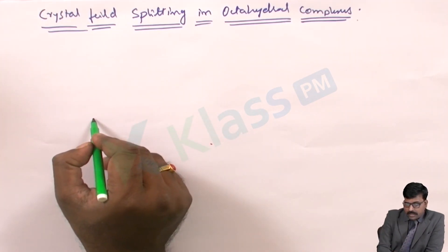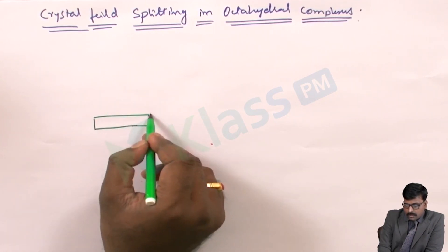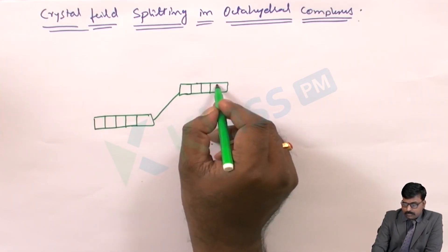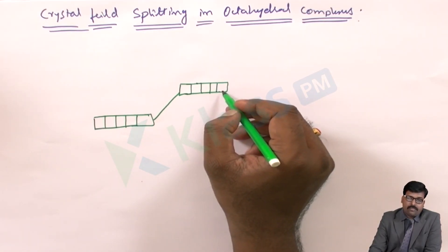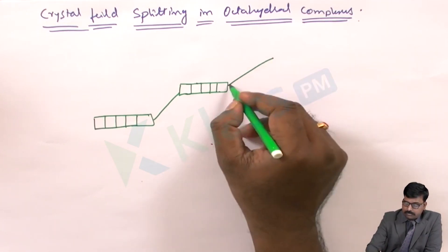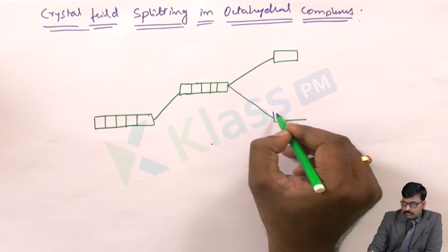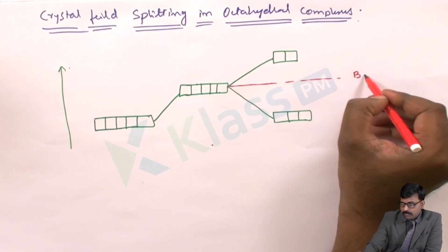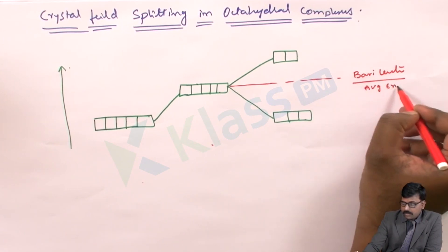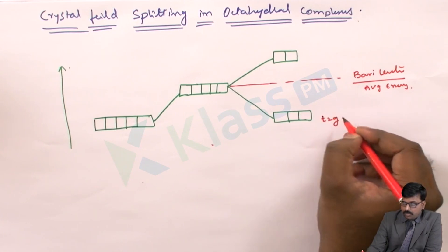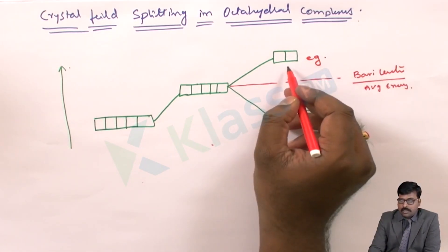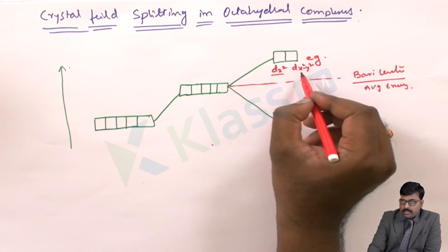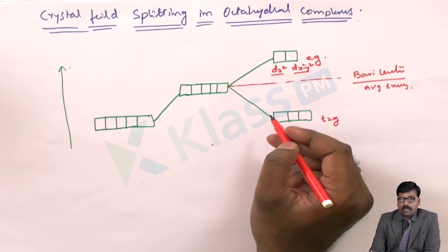Consider the d orbitals in the free state, then the average energy of d orbitals in a spherical field, and then the splitting. The barycenter or average energy is shown, with the T2G group at lower energy and the EG group at higher energy. The axial orbitals — dz² and dx²-y² — experience more electrostatic force from the ligands.